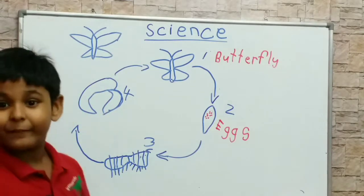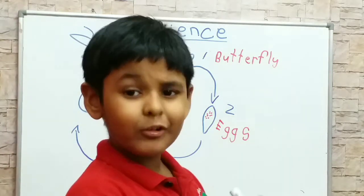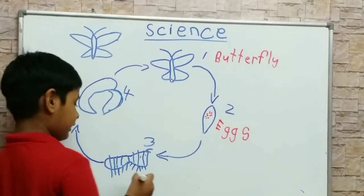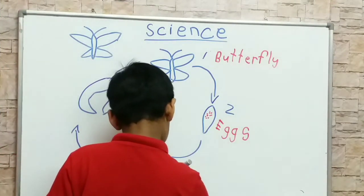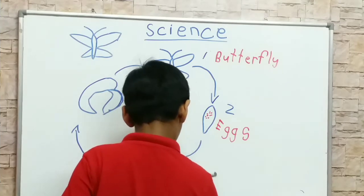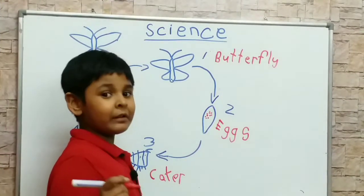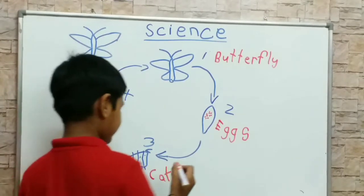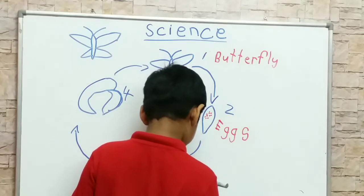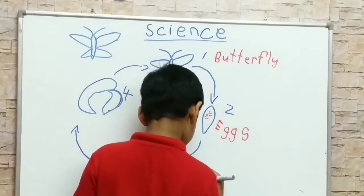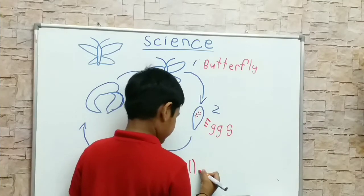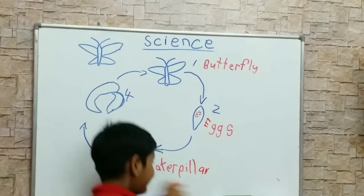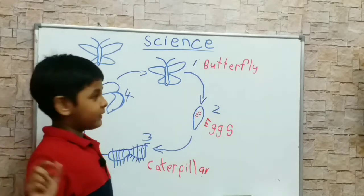So number three — what does it say, student? Caterpillar! So student, we write C, A, E, R — caterpillar. So student, I write B, A... so student we write B, I, L, L, E, L, A, R — caterpillar, caterpillar.